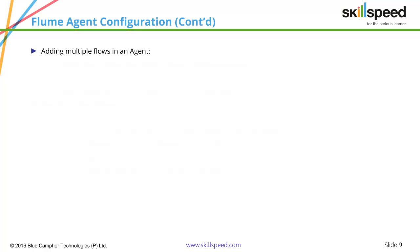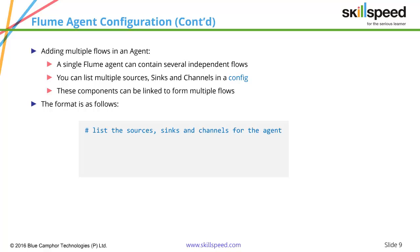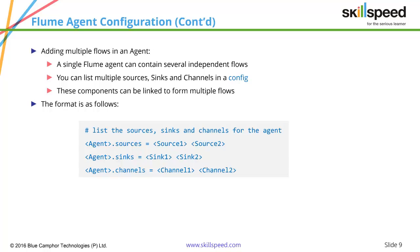A single Flume agent can contain several independent flows — we can have multiple sources, sinks, and channels within the same config file. For example, agent.sources equals source1 and source2; sinks equals sink1 and sink2; channels equals channel1 and channel2. Maybe source1 is Twitter, channel1 is a file channel, and sink1 is HDFS. Source2 can be Avro, channel2 can be a memory channel, and sink2 can be HBase.